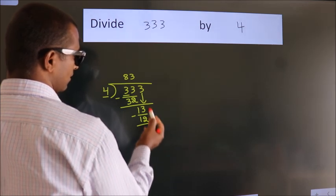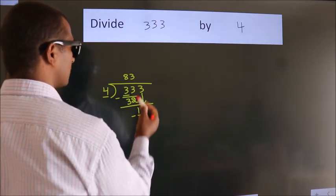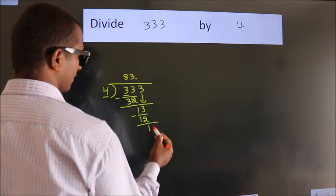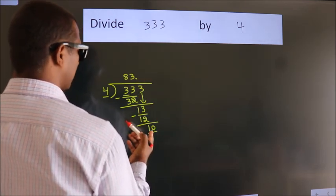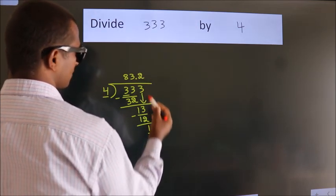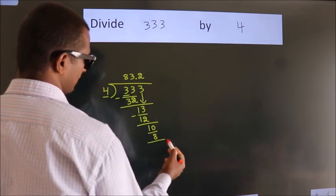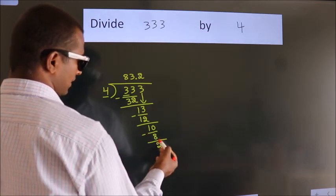After this, no more numbers to bring it down. So what we do is, we put a dot and take 0. So, 10. Then a number close to 10 in the 4 table is 4 times 2 equals 8. Now we subtract. We get 2.